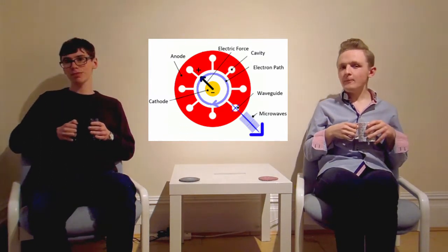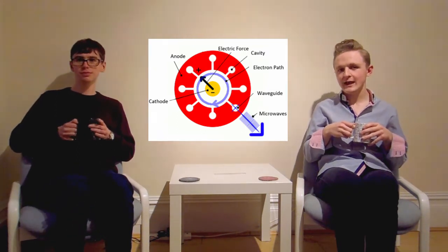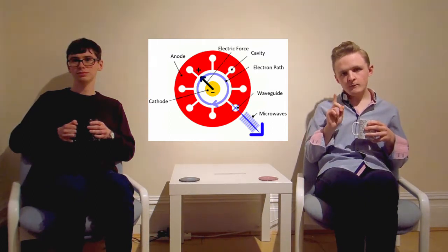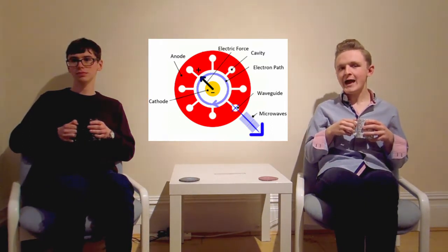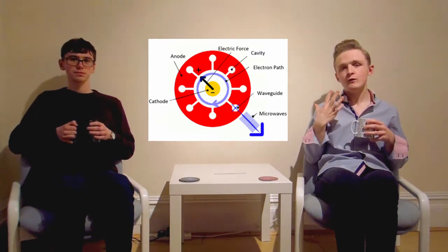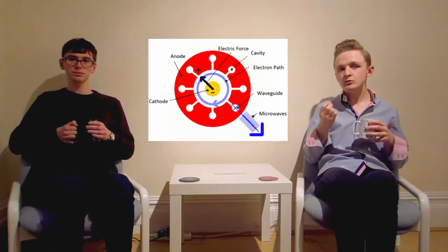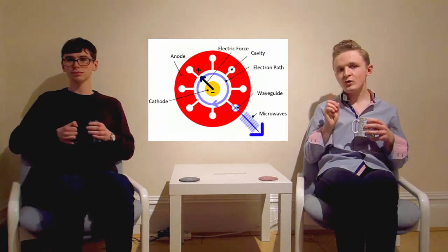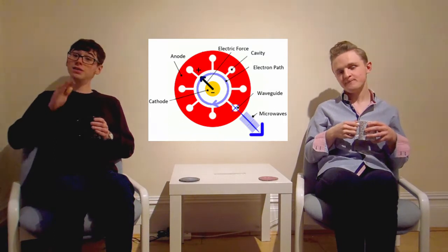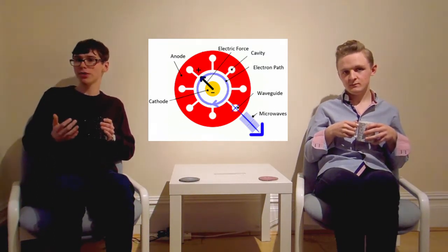A powerful magnet is also placed underneath to generate a magnetic field pointing along the length of the tube, out of the screen in this diagram. So, when you switch on your microwave, the cathode heats up and boils off electrons, which are attracted to the ring. But, because of the magnetic field, the electrons don't shoot off in a straight line, but travel round in a circular path between the anode and cathode. As they do this, they obviously pass the cavities and emit microwaves — but how?